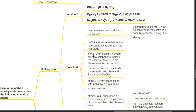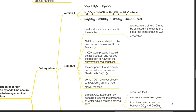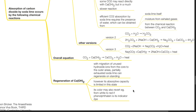If KOH were present it would act as a catalyst and replace the position of NaOH in the equations. The compound actually consumed in soda lime and baralime is calcium hydroxide. Some carbon dioxide may react directly with calcium hydroxide but in a much slower reaction. Efficient CO2 absorption by soda lime requires the presence of water, which can be obtained from soda lime itself, moisture from exhaled gases, and from the chemical reaction between CO2 and Ca(OH)2. The overall equation is: CO2 + Ca(OH)2 → CaCO3 + H2O + heat.